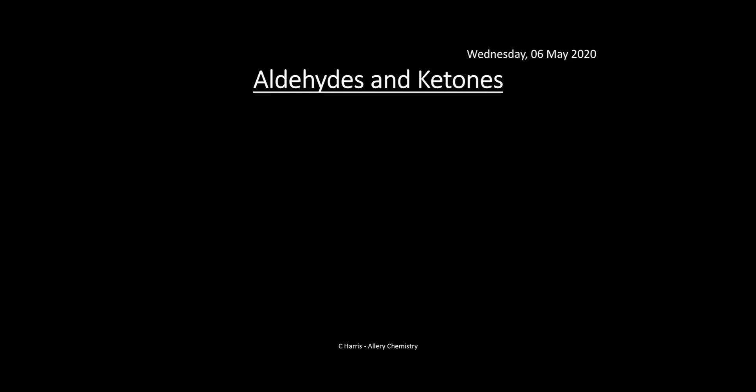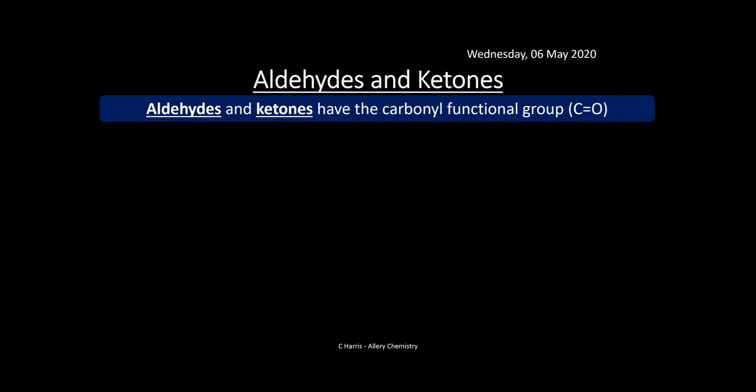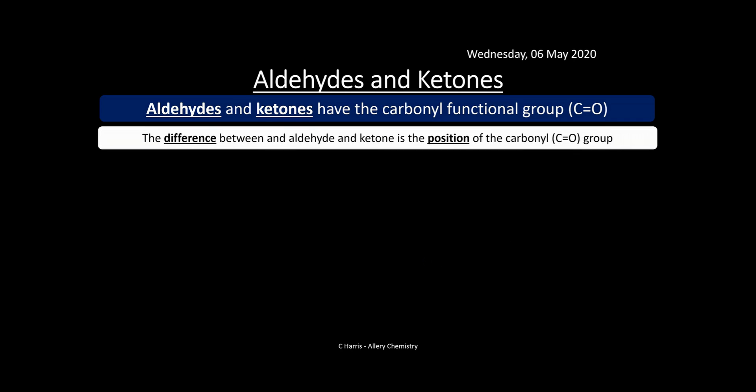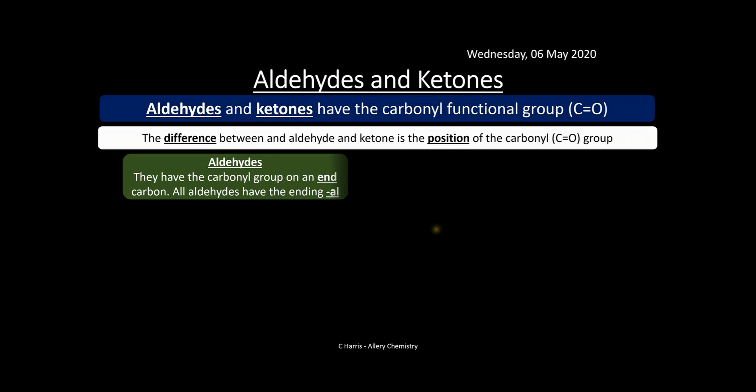Let's start with aldehydes and ketones. Aldehydes and ketones both have the carbonyl functional group, which is C double bond O. The difference between an aldehyde and a ketone is the position of that carbonyl group. Aldehydes have the carbonyl group on the end carbon and always have an ending of -al: ethanal, methanal, propanal, etc.